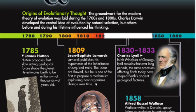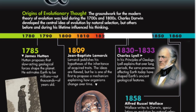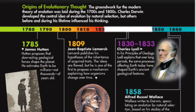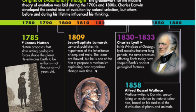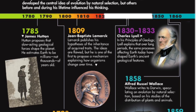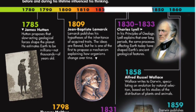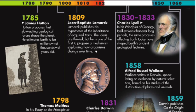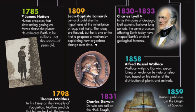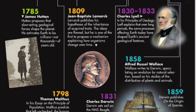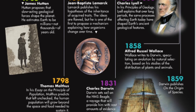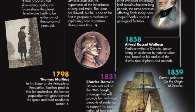1785 — James Hutton proposed that slow-acting geological forces shaped the planet, estimating the Earth to be millions, not thousands, of years old. 1789 — Thomas Malthus, in his essay on the principle of population, predicted that if left unchecked, the human population would grow beyond the space and food needed to sustain it. 1809 — Jean-Baptiste Lamarck published his hypothesis of the inheritance of acquired traits; though the ideas were flawed, he was one of the first to propose a mechanism explaining how organisms change over time. 1831 — Charles Darwin set sail on the HMS Beagle, a voyage that provided him vast evidence to support his exploration of how evolution works.